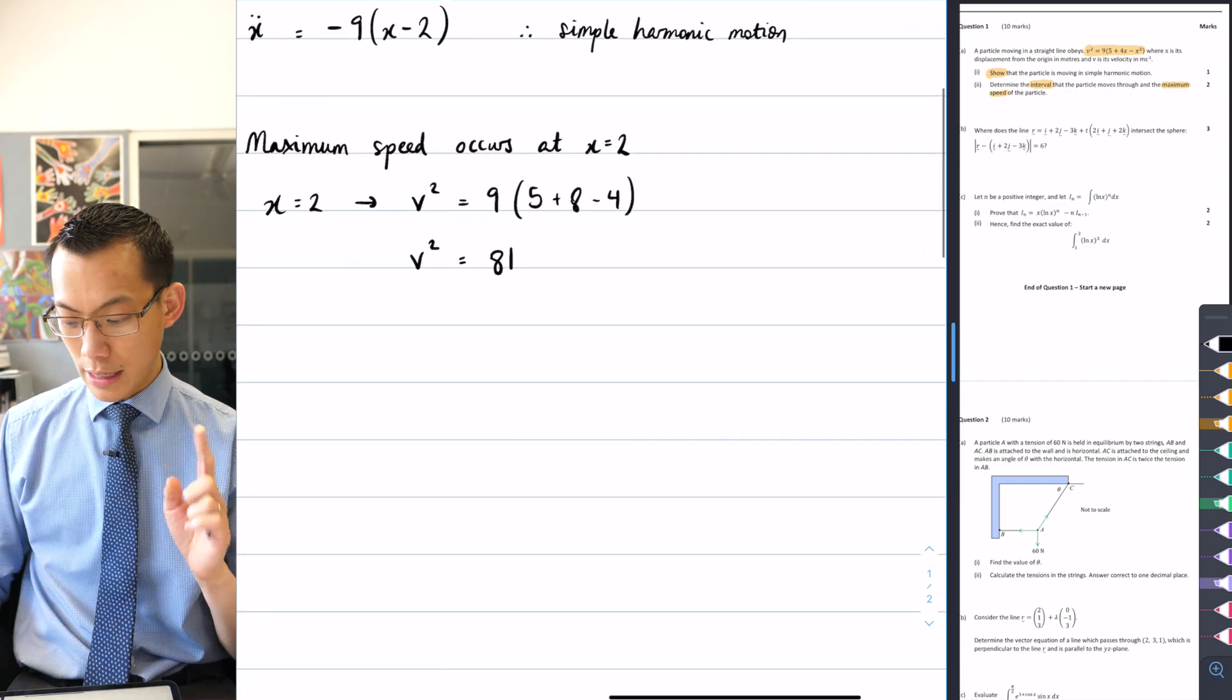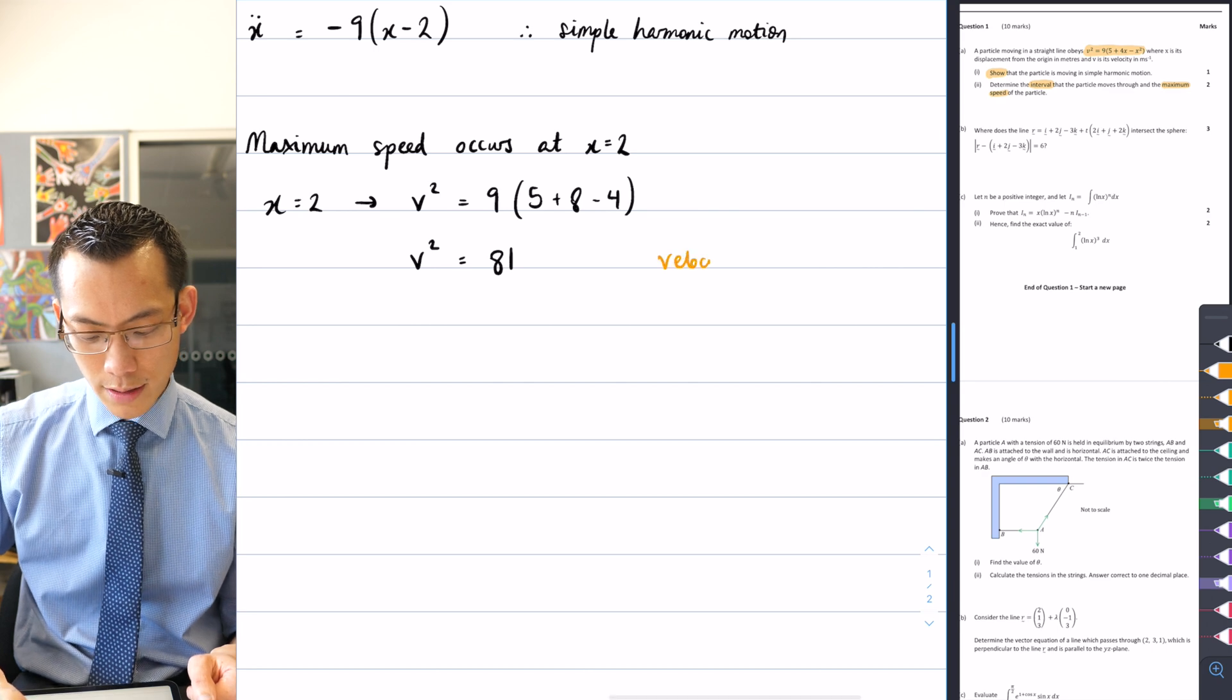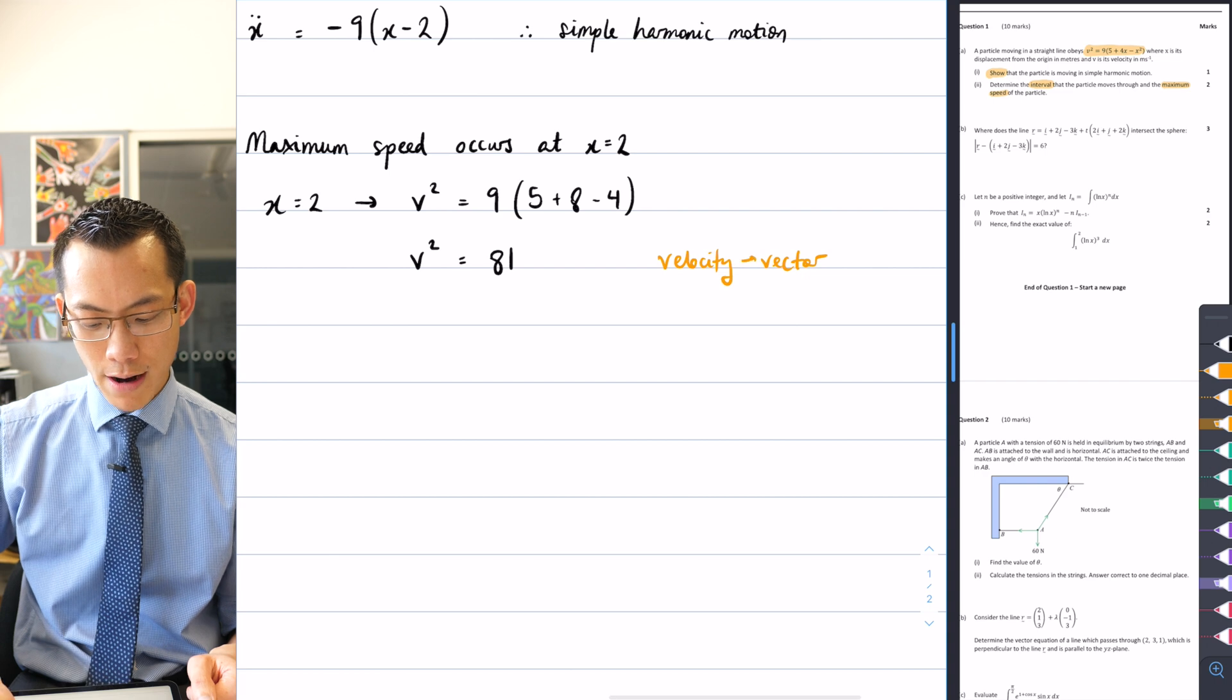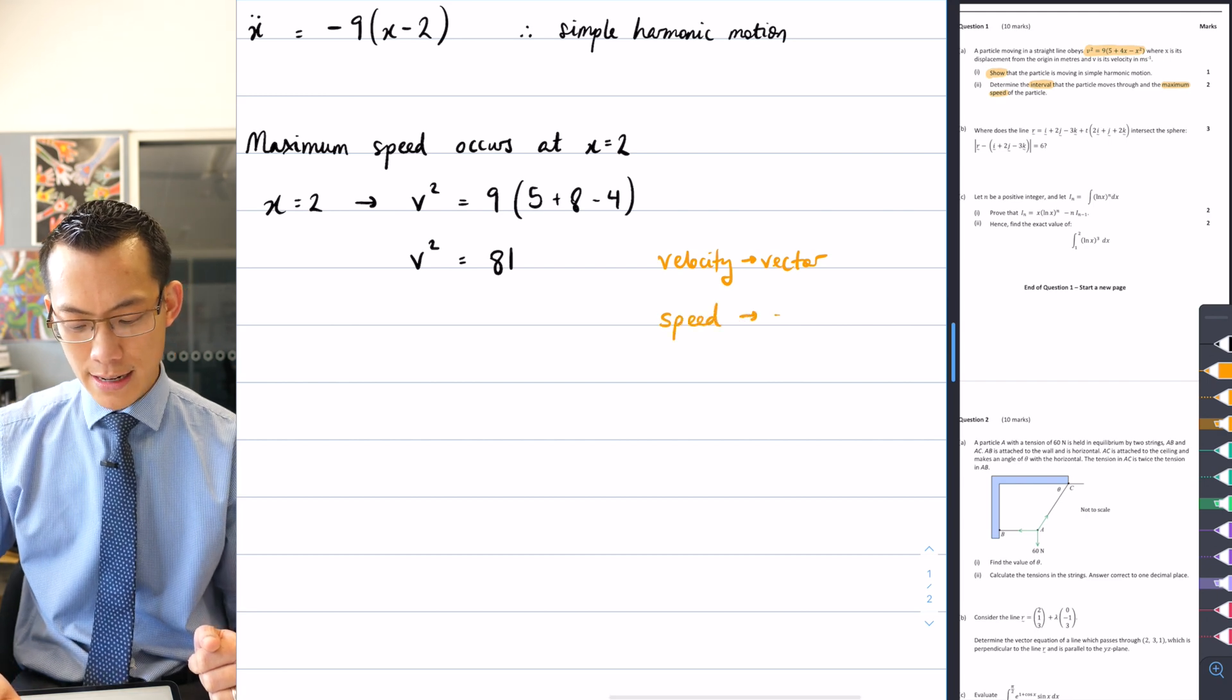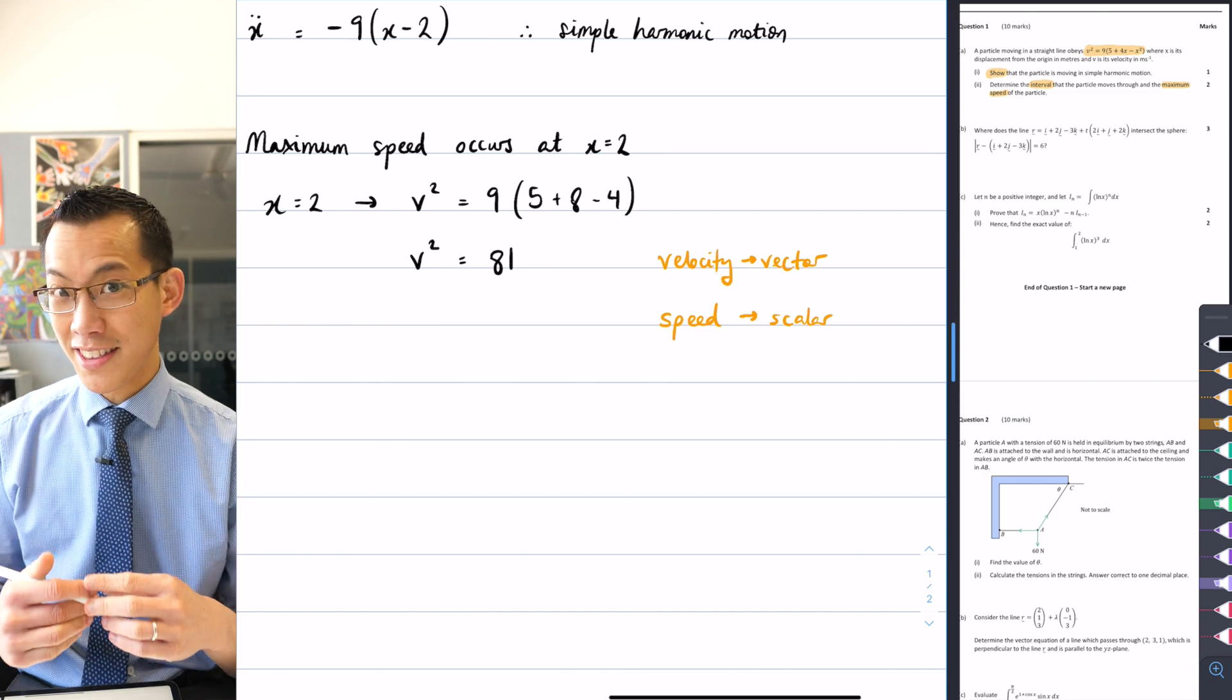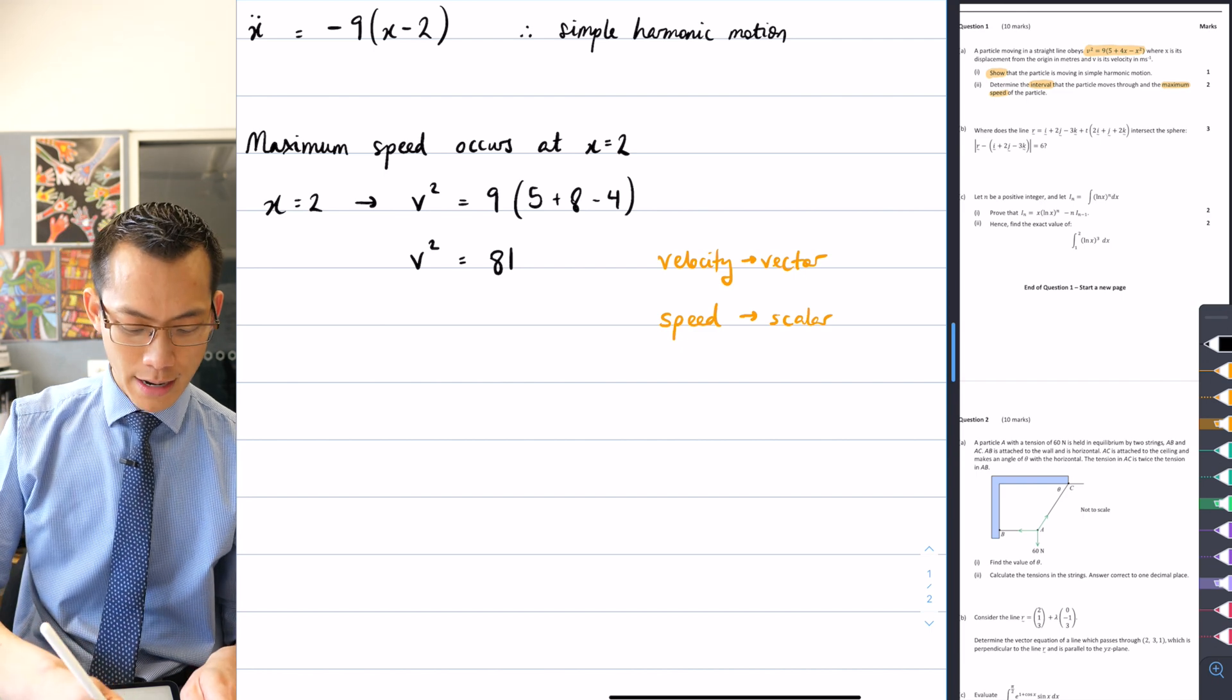However, what we need to remember, and this is a key point that some students struggle with, velocity is a vector, so it minds which direction you are in. But we are not asked for velocity, or maximum velocity, we are asked for maximum speed, and speed is a scalar. I think this is coincidental, but this is kind of convenient that it alliterates. Velocity is a vector, speed is a scalar.